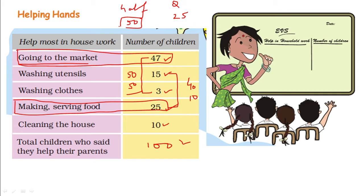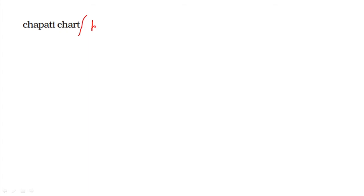This data can be represented in picture form. How to represent this in picture form? Let us have some basic understanding. What is the shape of the chapati chart? It is also called a pie chart. Why do we call it chapati chart? Because the shape of this chart is like a chapati, and what is the shape of a chapati? It is round.